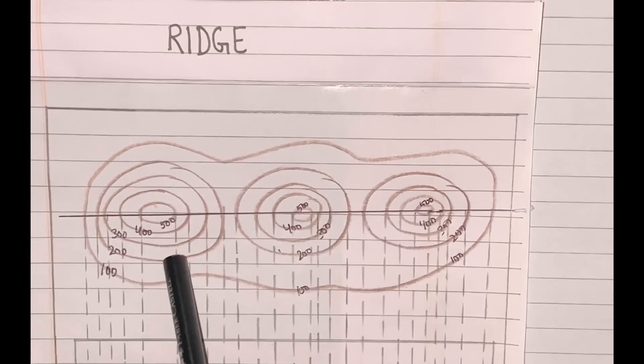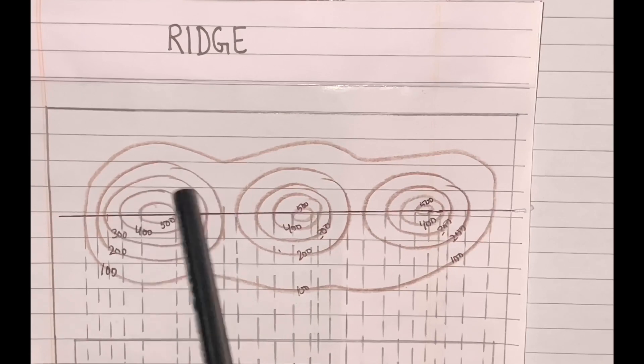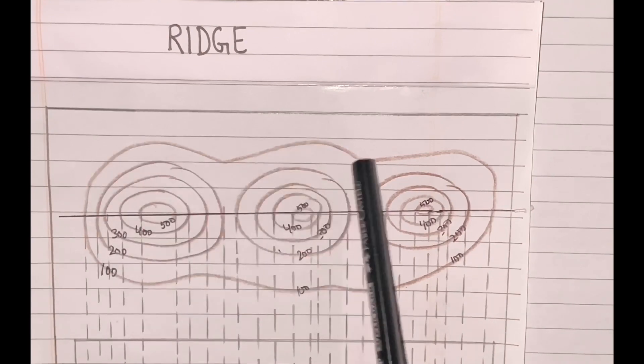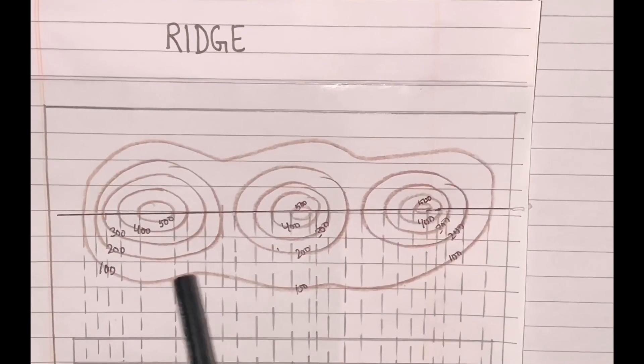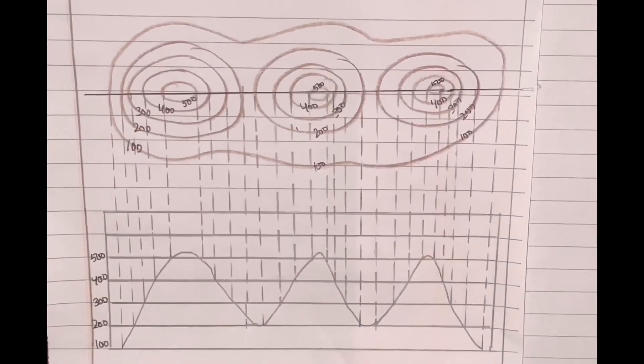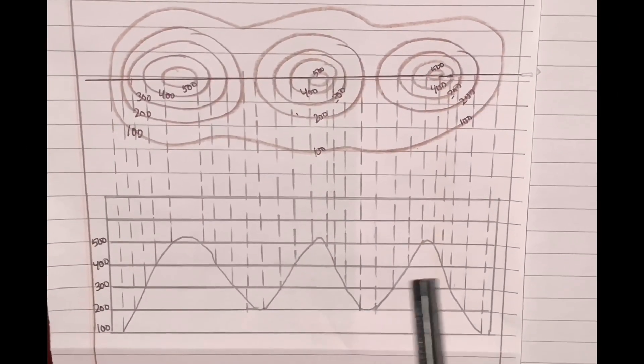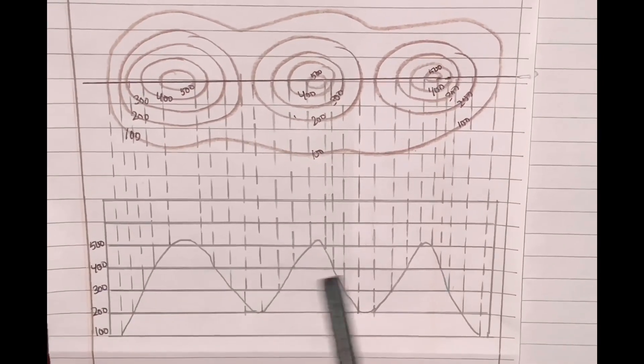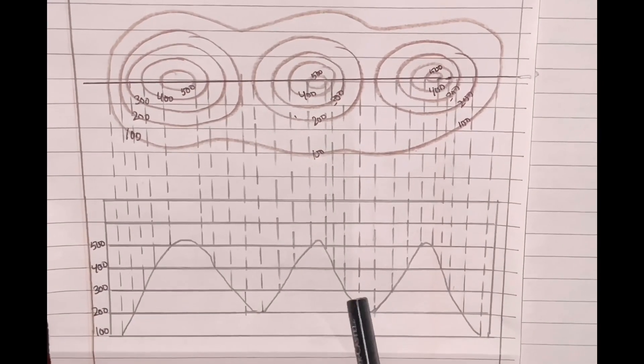From this it is clear that this represents one mountain, a second mountain, and a third mountain. The outer contour line shows that all three mountains are interconnected. With the help of this cross section, it is clear that three mountains are there and all three are connected to each other.